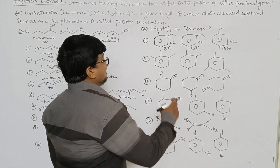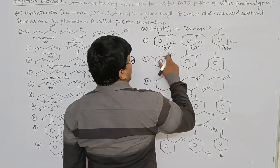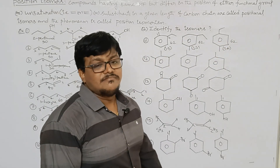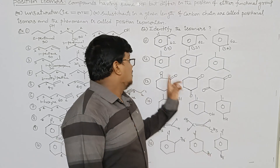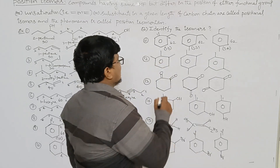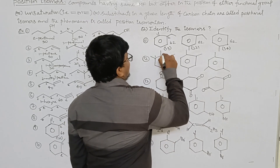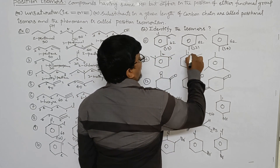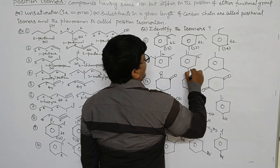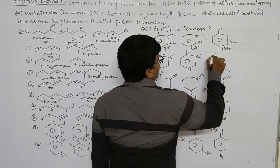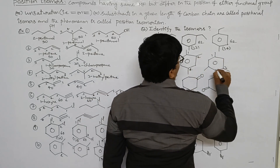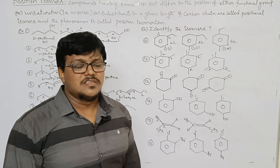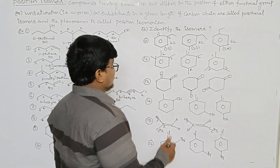Benzene having three methyl groups — trimethylbenzene. The three arrangements are 1,2,3-trimethylbenzene; 1,2,4-trimethylbenzene; and 1,3,5-trimethylbenzene. These three are positional isomers.